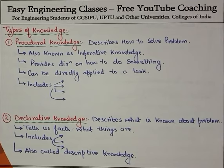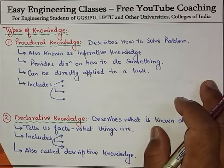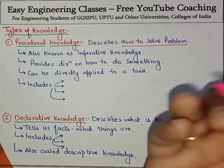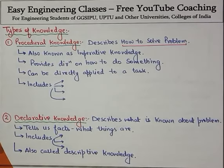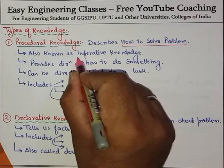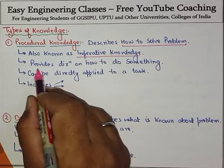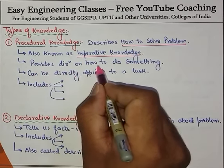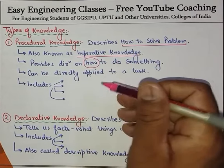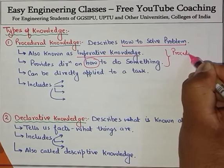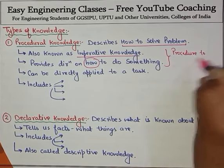The first type is procedural knowledge. Procedural means you are describing a process — basically it describes how to solve a problem. It is also known as imperative knowledge, and it simply provides directions on how to do something. Basically, we are specifying the procedure to do something.